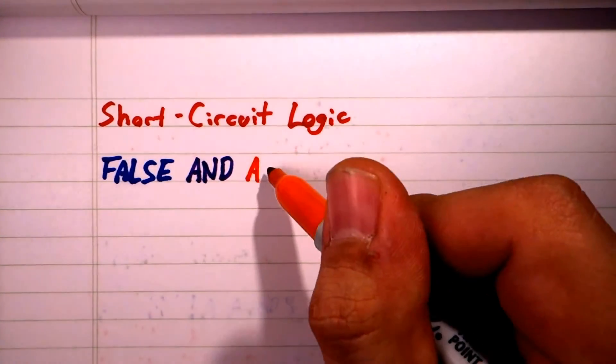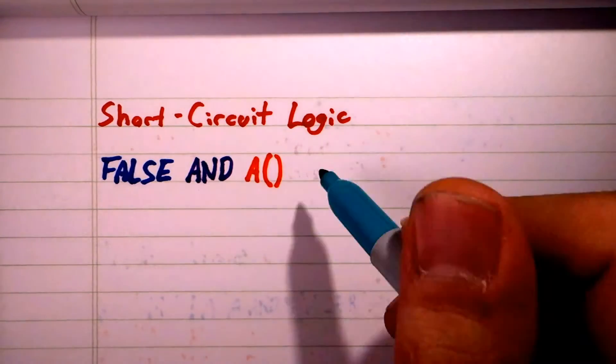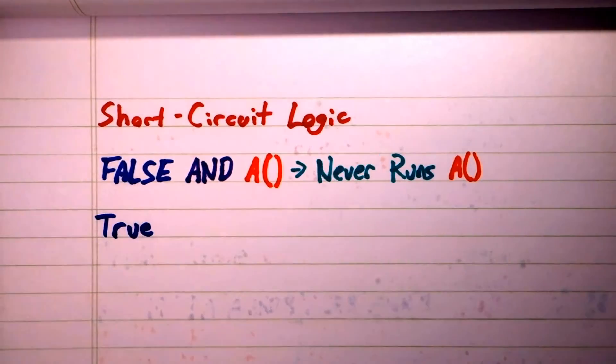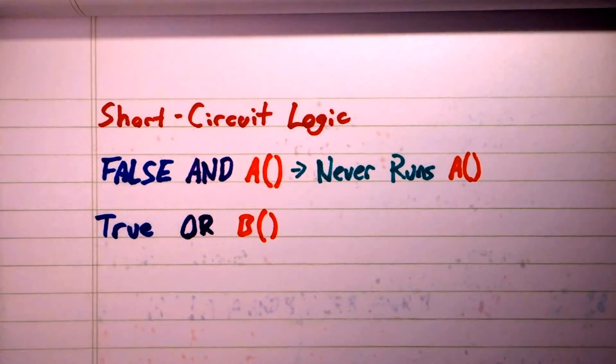That means that FALSE and A will never evaluate A. It also means that TRUE OR B will never evaluate B.